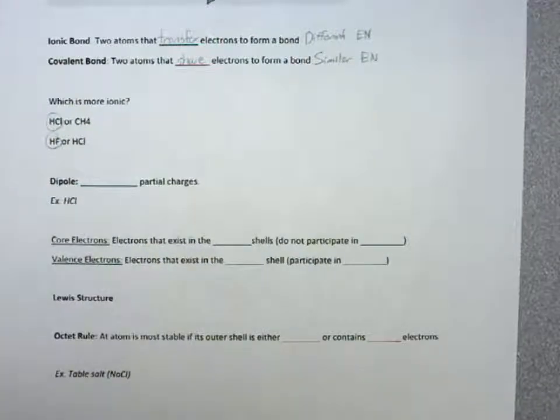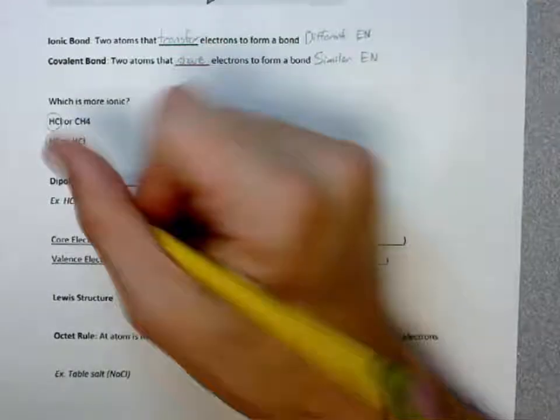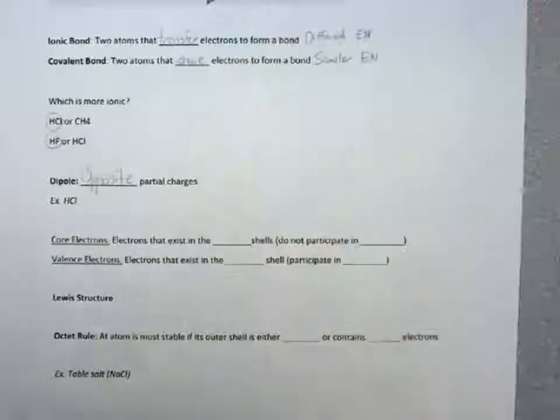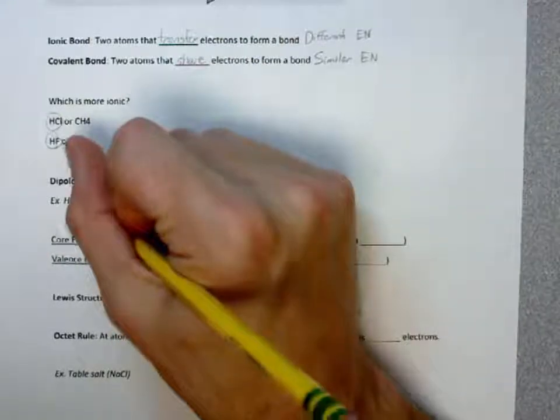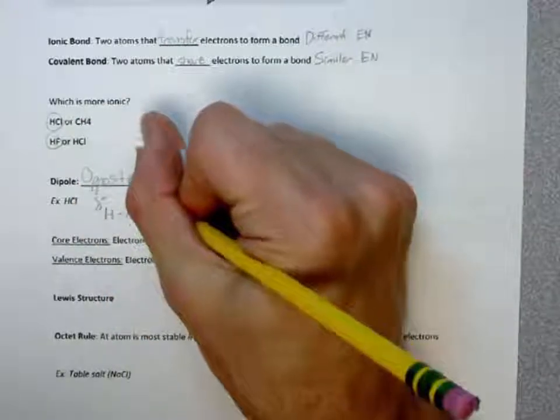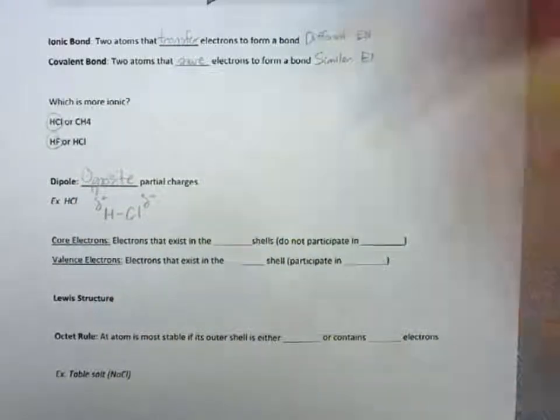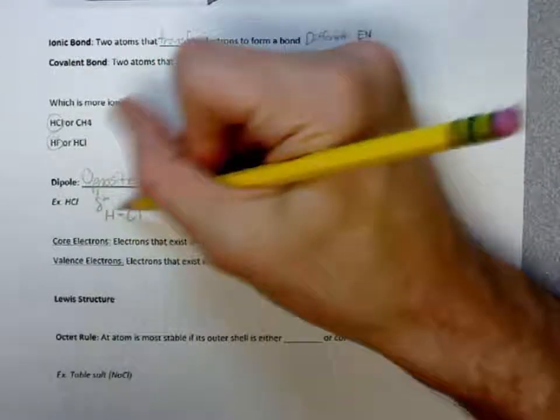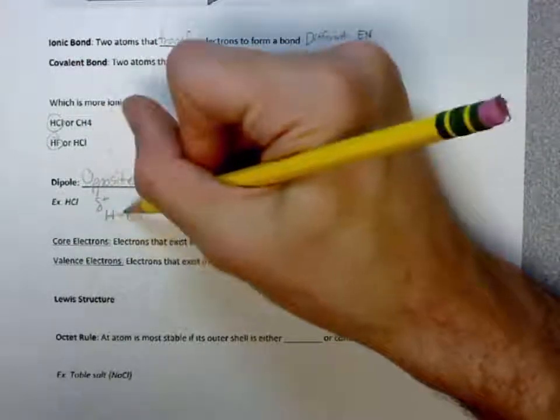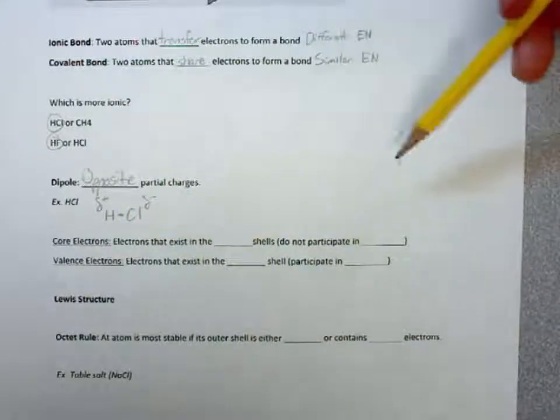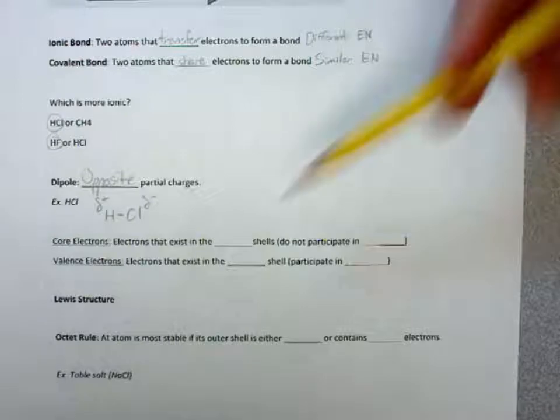What you also get is these things called dipoles, which is opposite partial charges. And so, how we represent this is with a delta plus and a delta minus. This chlorine is withdrawing, is pulling electrons from this hydrogen very slightly because of its electronegativity.